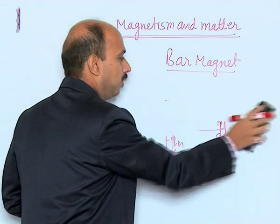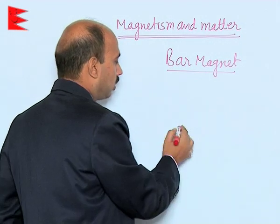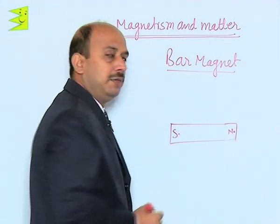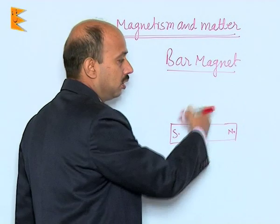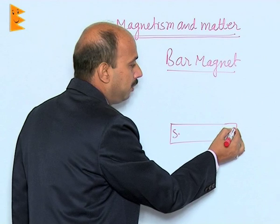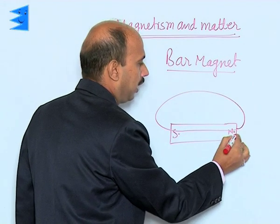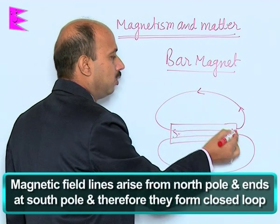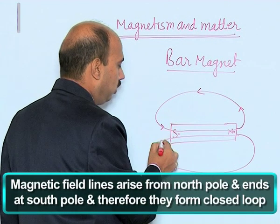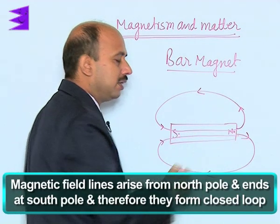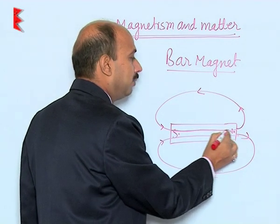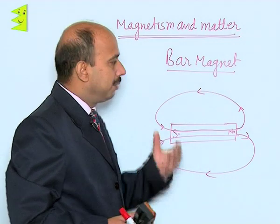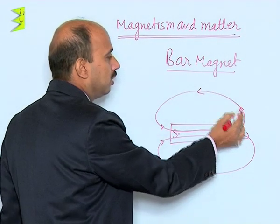For any bar magnet having a north and south pole, if you place a north pole or a magnetic compass near it, it will follow a certain path. Magnetic field lines actually originate from the north pole and merge at the south pole. They are also found inside the magnet — whereas in a conductor, electric field lines are not found inside. So magnetic field lines actually form closed loops.